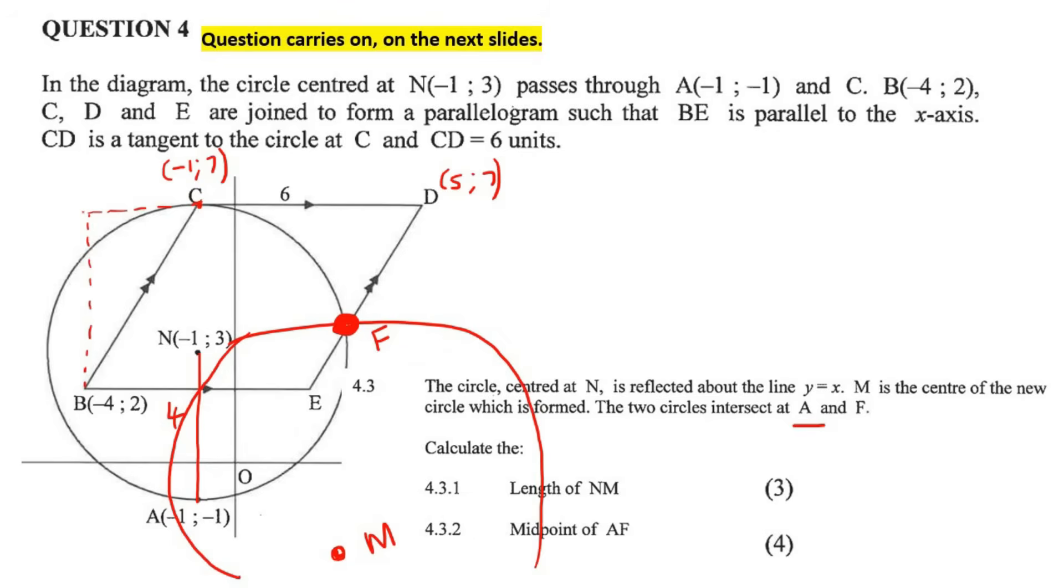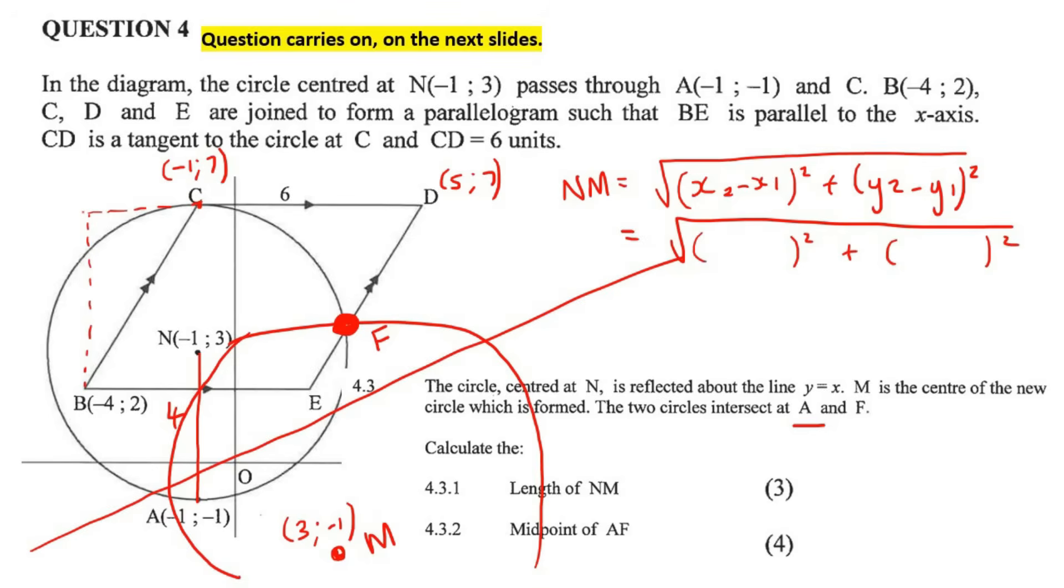It says calculate the length from n to m. That's easy, because if you reflect across this line, so if you take this coordinate and you reflect it to m, the coordinates just switch around. So this would just become 3 and minus 1. So now you can work out the distance of nm using the distance formula. So let's just write that down. x2 minus x1 squared plus y2 minus y1 squared. So that would be, for example, 3 minus minus 1, and then minus 1 minus 3. And if we had to go fill that all in, we would end up with 4 square root 2. And then if we round that to two decimal places, we end up with 5.66.